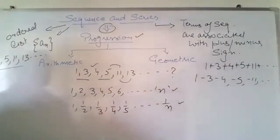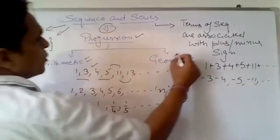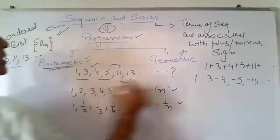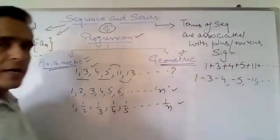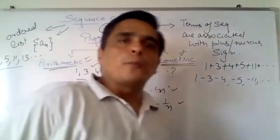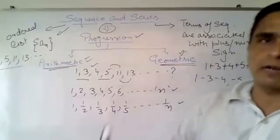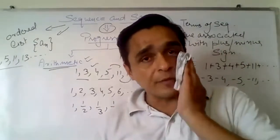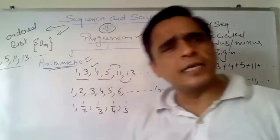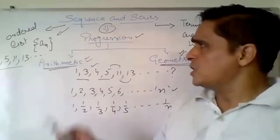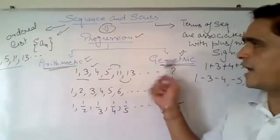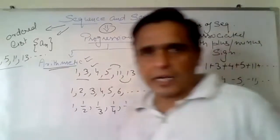In our syllabus, there are two types of progression: the first is arithmetic progression and the second is geometric progression. We will learn about these two progressions in this chapter. CBSE has deleted the special series topic, so we are left with only these two topics.